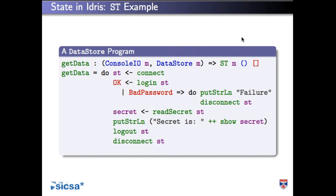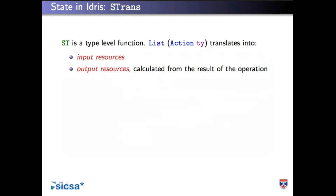What is ST? ST is itself not really a data type, but a type-level function. It's a type-level function that translates a list of actions — actions being transitions on individual resources — into what the system really needs: what resources we have at any given point. Any operation will have a list of input resources and a list of output resources, just as our door had one single input resource state and one single output resource state. Our operations in ST will have a list of input resource states and a list of output resource states, and there's no requirement that these lists are the same length.